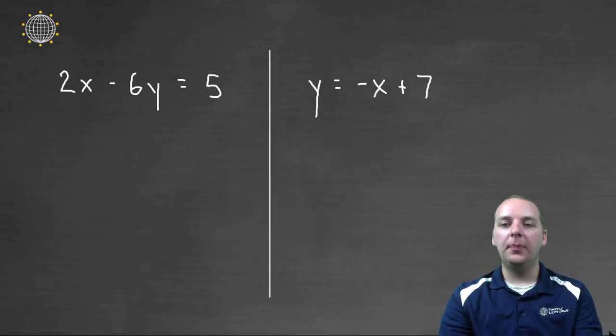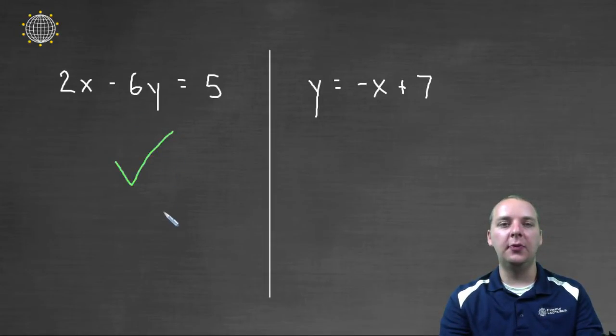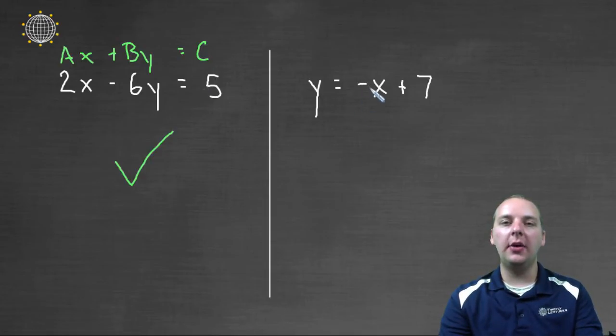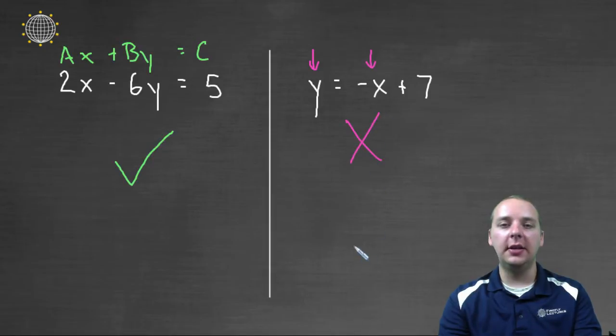All right, now let's take a look at these two real quick here. See if you can identify which, if any, or both of these are in standard form. This one is in standard form, because it looks like AX plus BY equals C. But notice this one over here, the X and the Y are not on the same side. The Y is on one side and the X is on the other side with the constant. So this would not be in standard form.